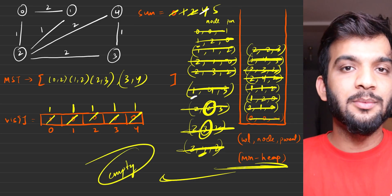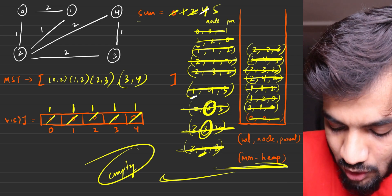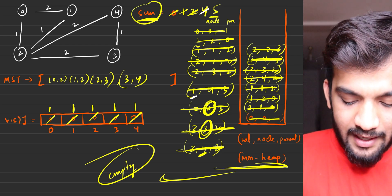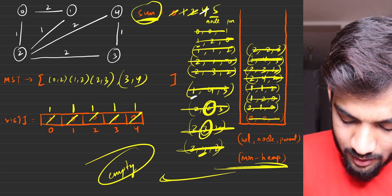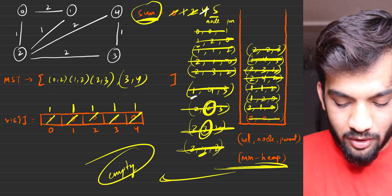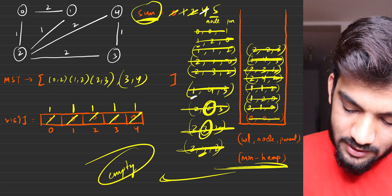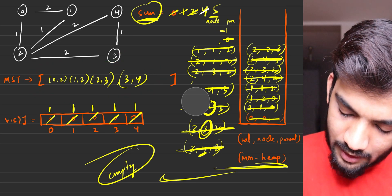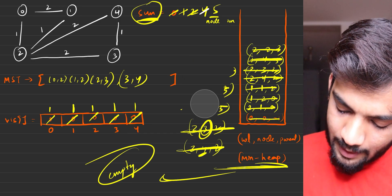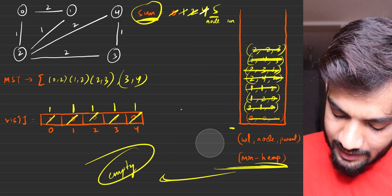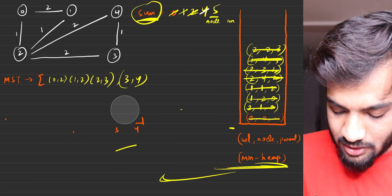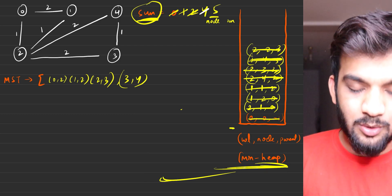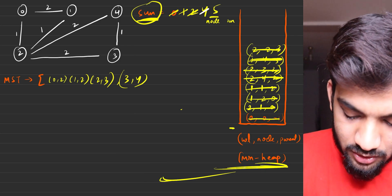Prim's algorithm is over. The algorithm has found the MST sum as 5, and the MST edges are stored in the MST list. Let's quickly erase this and draw the MST to verify the idea is clear.